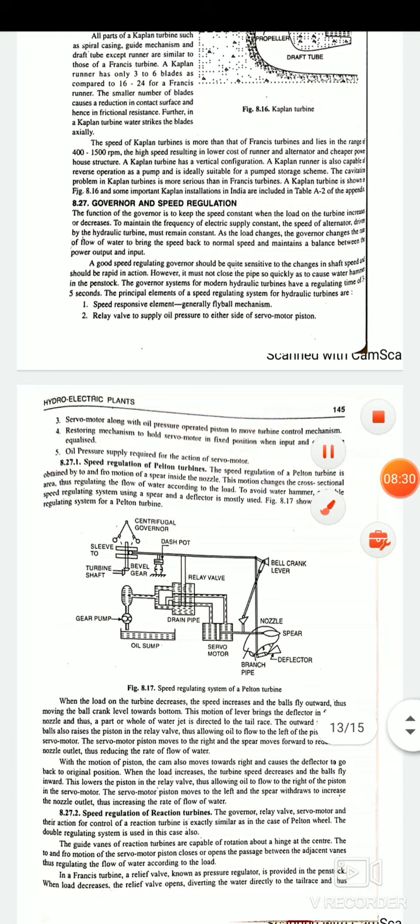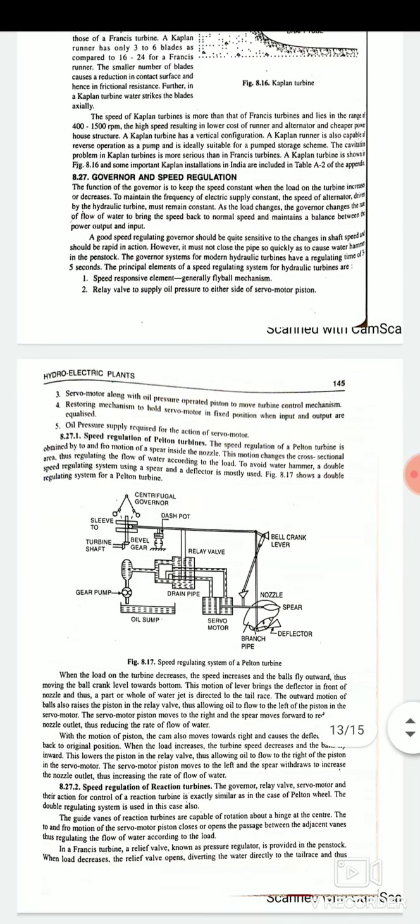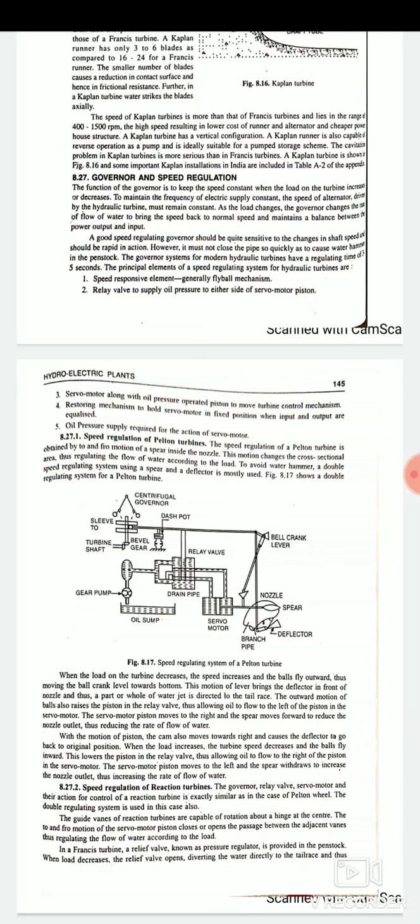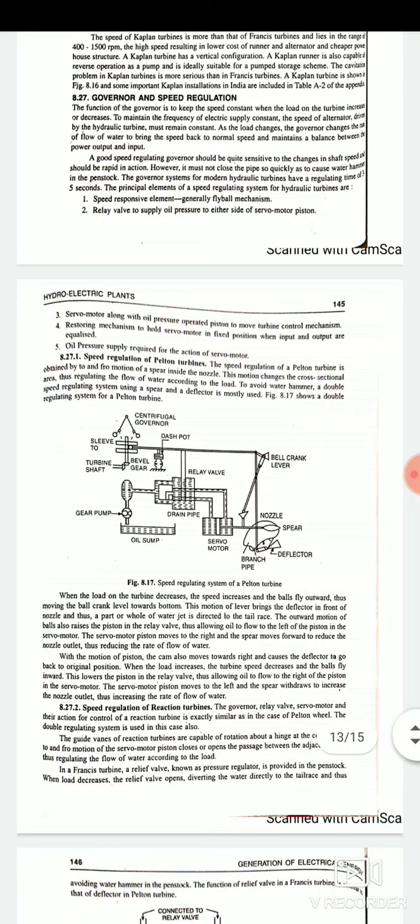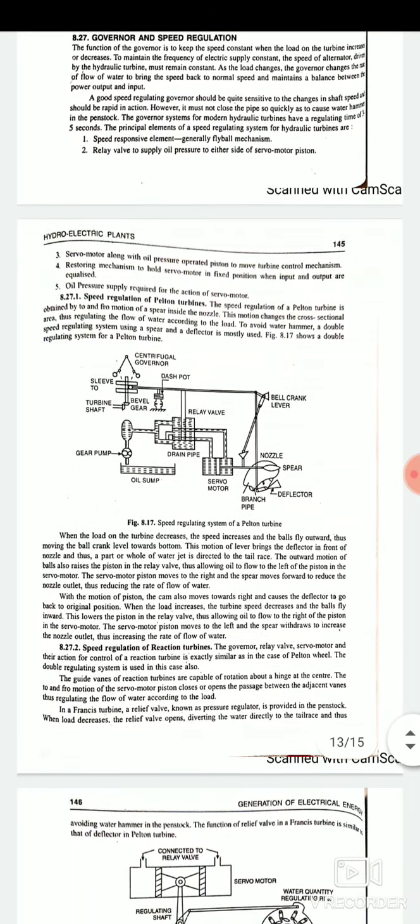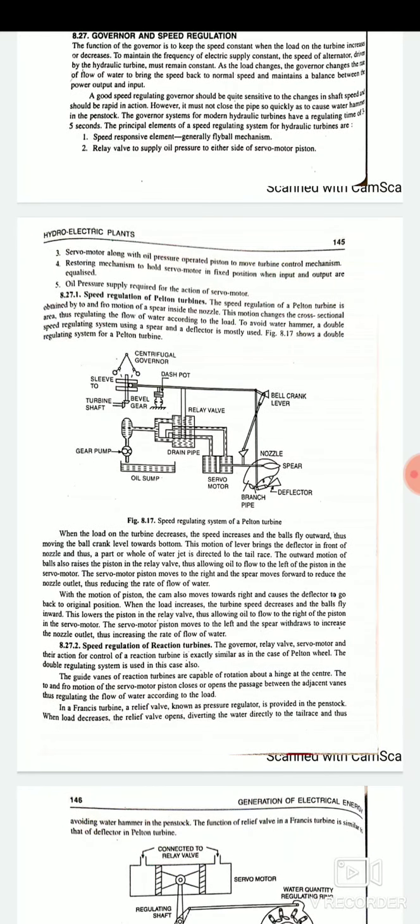Next is your governor and speed regulation. The function of the governor is to keep the speed constant when the load on the turbine increases or decreases. To maintain the frequency of electric supply constant, the speed of the alternators driven by the hydraulic turbines must remain constant. As the load changes, the governor changes the rate of flow of water to bring the speed back to normal speed and maintains a balance between the power output and input. A good speed regulating governor should be quite sensitive to the changes in the shaft speed and should be rapid in action. The principal elements of a speed regulating system for hydraulic turbines are: speed responsive element, generally fly valve mechanism; relay valve to supply oil pressure to either side of servo motor piston; servo motor along with oil pressure operated piston to move turbines control mechanisms; fourth one is restoring mechanism to hold servo motor in fixed position when input and output are equalized; and the last is oil pressure supply required for the action of servo motor. So these are the principal elements of a speed regulating system for hydraulic turbines.